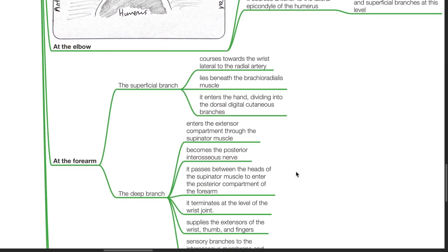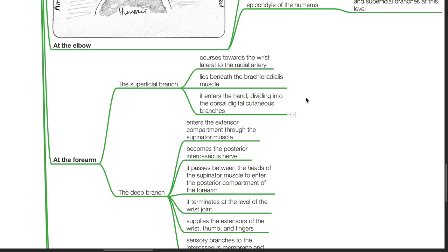At the forearm, the superficial branch courses towards the wrist lateral to the radial artery. It lies beneath the brachioradialis and enters the hand, dividing into the dorsal digital cutaneous branches.